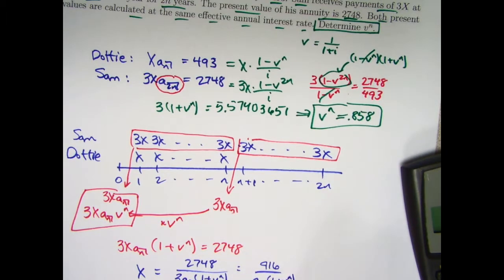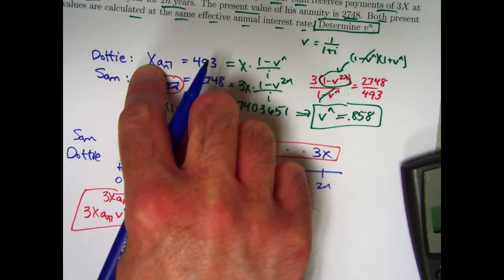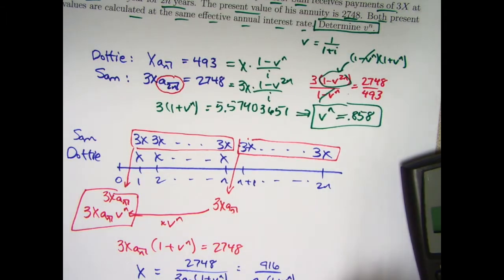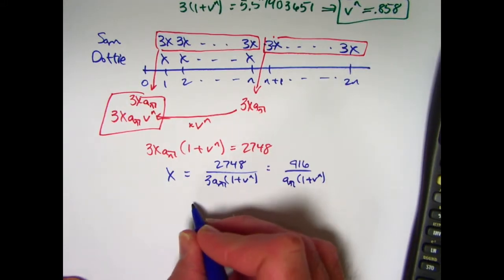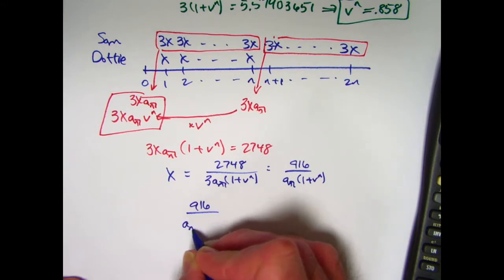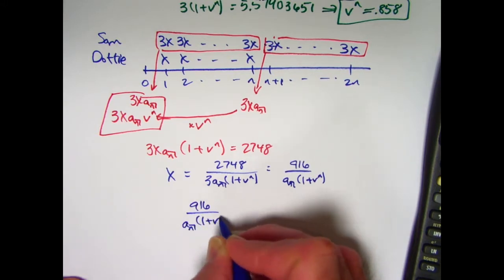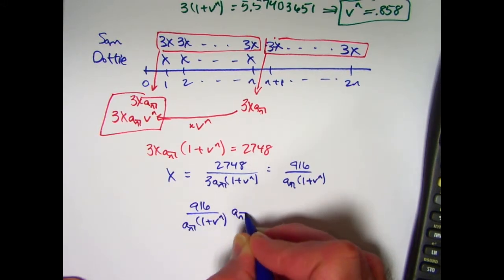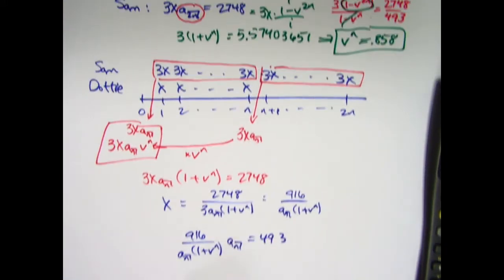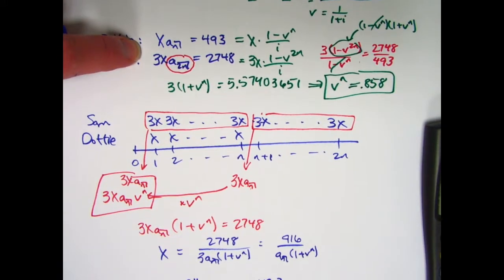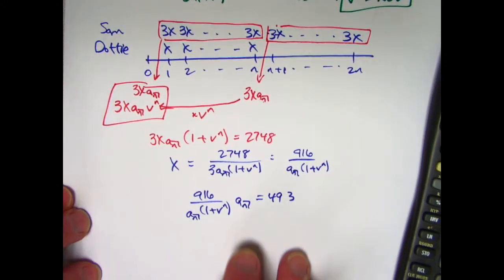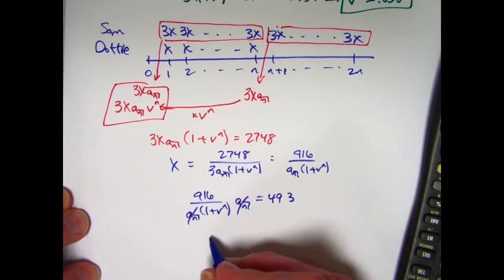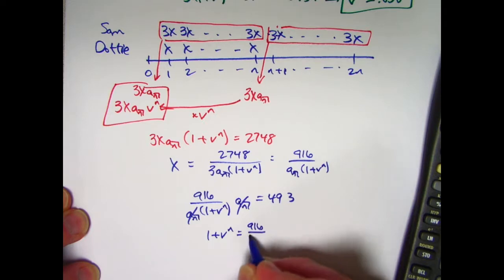Now substitute that back into Dottie's equation in place of the x. And the a n's will cancel, and you'll be able to solve for v to the n. So here comes Dottie's equation. Substitute this in for x. There it is. Compare with this. I substituted that thing in for x right up there and got this. The a n's cancel.